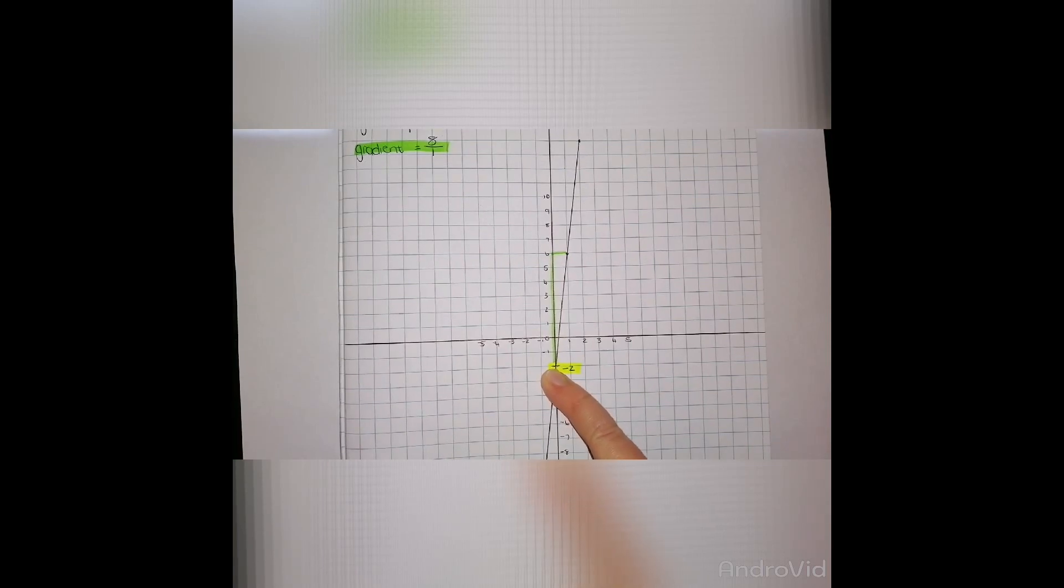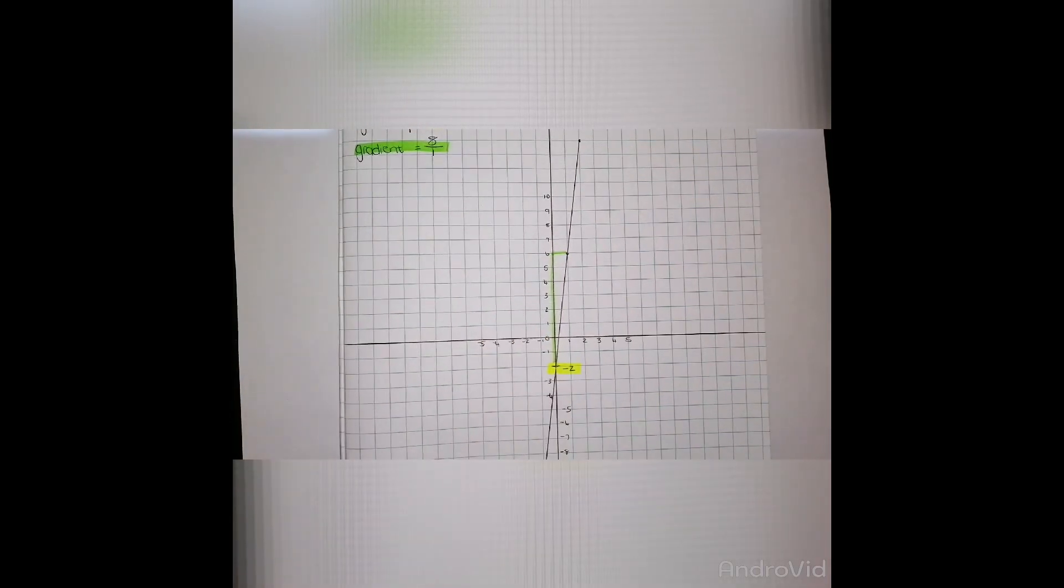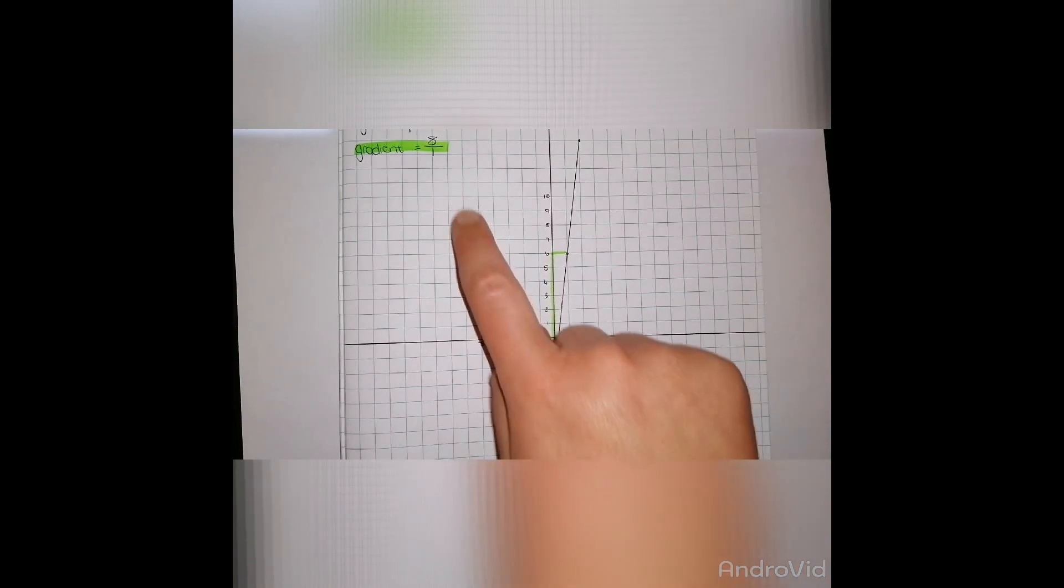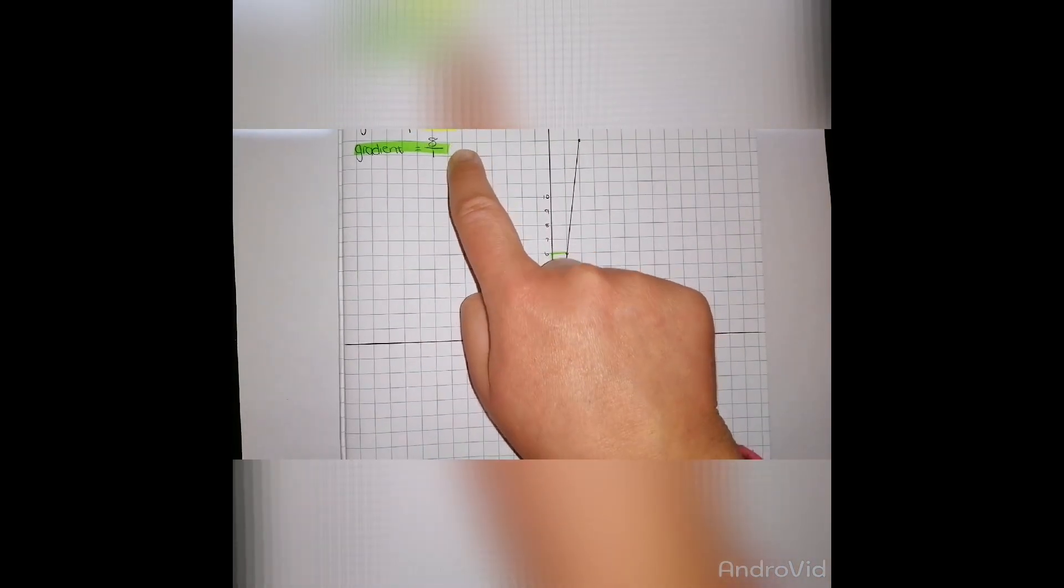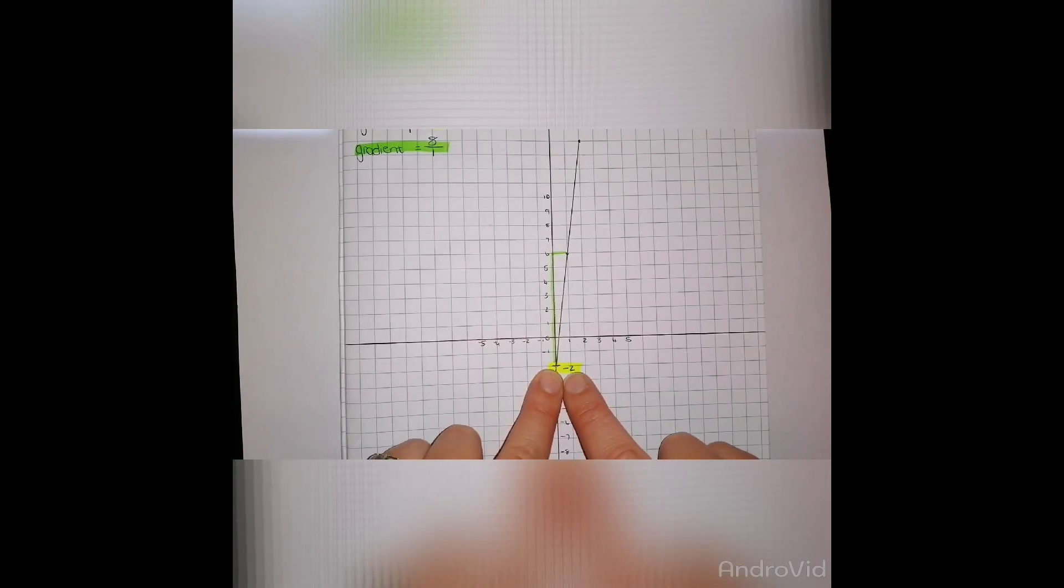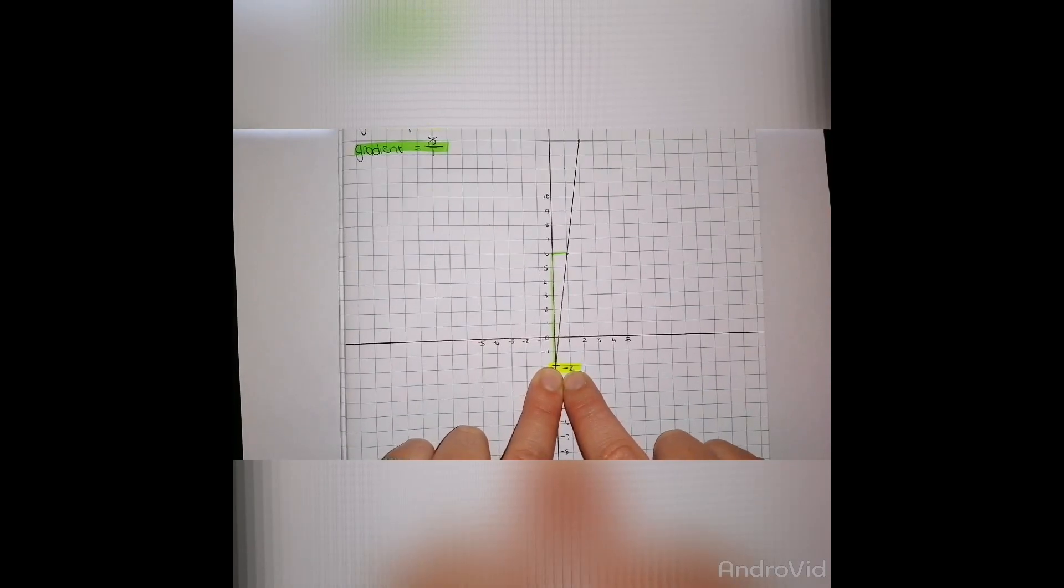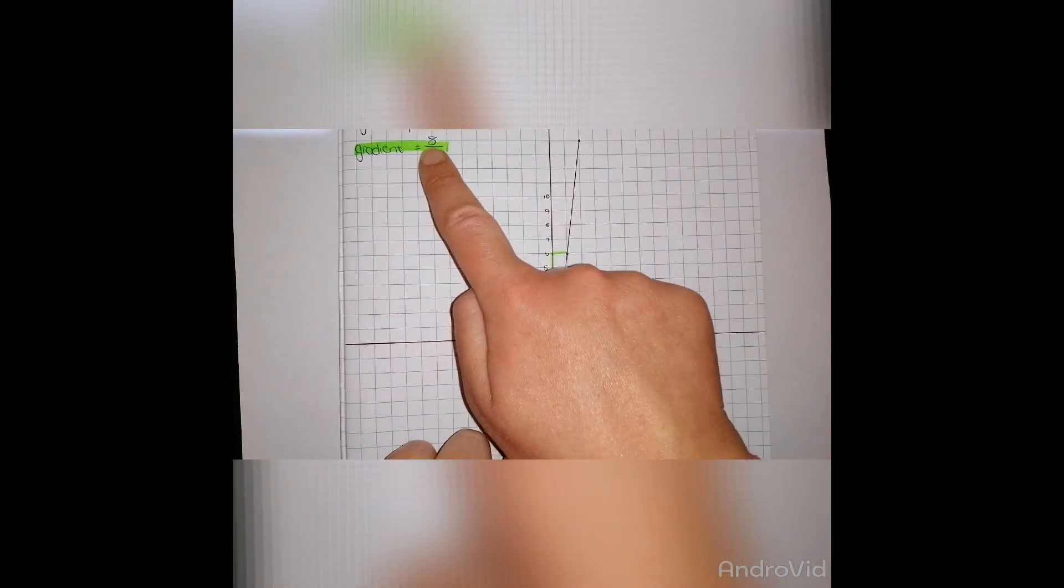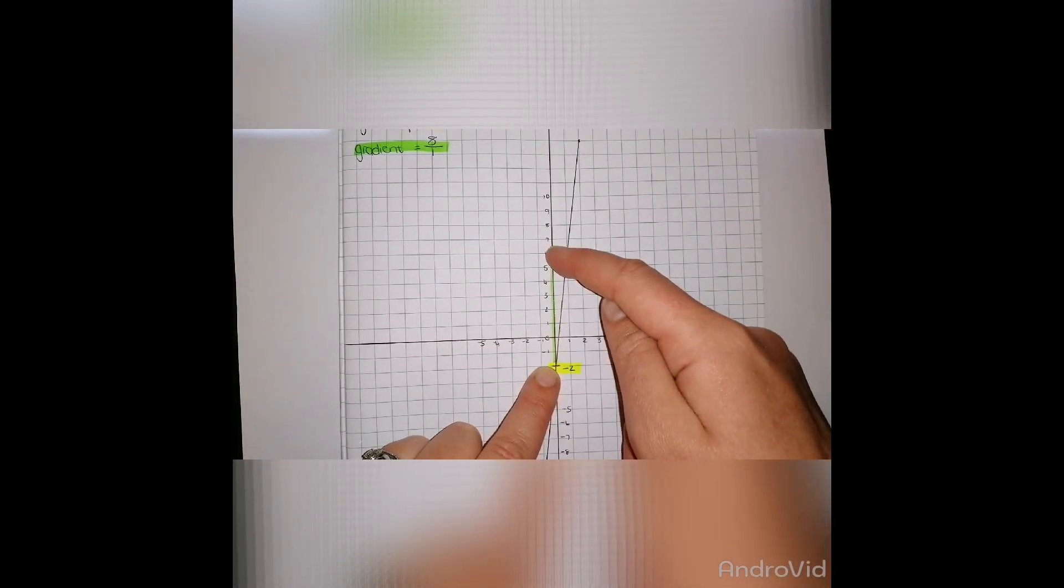Now I need to find the gradient to determine what my line actually would look like. We have said that it's rise over run, so from my y-intercept I need to move 8 units upwards because it is positive, so I go in the positive direction.